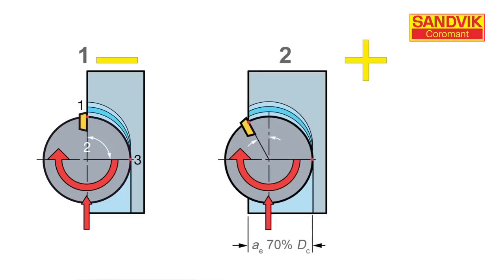In the second illustration, the cutter is radially engaged approximately 70%. The insert is easing itself into cut. This is the best possible position.